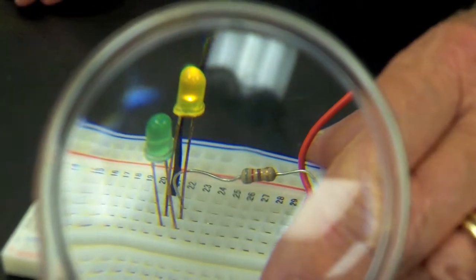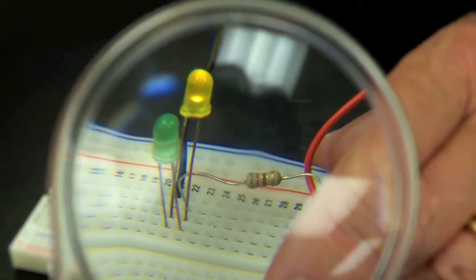See what happens. Put him in backwards. He doesn't like the work, but the yellow guy is happy. So, the current flows in one direction. The current doesn't flow in the other direction. That's what LED is all about.